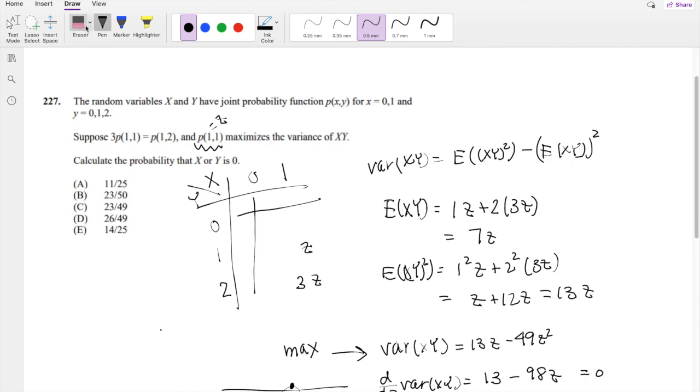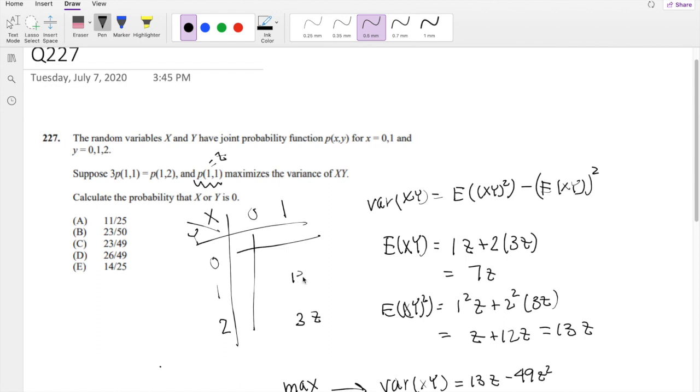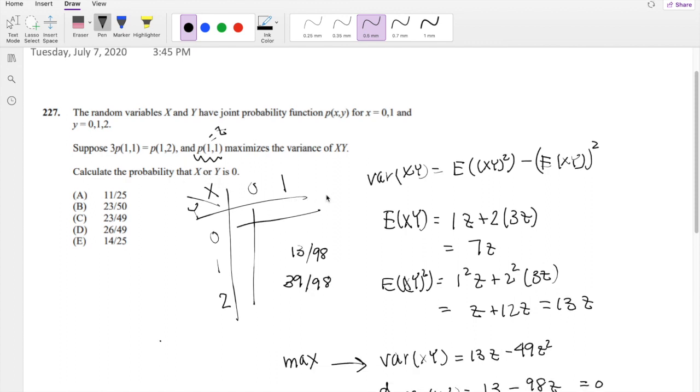So now our modified graph looks like this. If z is 13 over 98, and 2,1 or 1,2 is 3 times that, that's going to be 39 over 98. The probability that it's going to be X, Y equals 0 is everything but those. So we just have to do 1 minus 39 over 98, minus 13 over 98, which is equal to 23 over 49, which is our answer C.